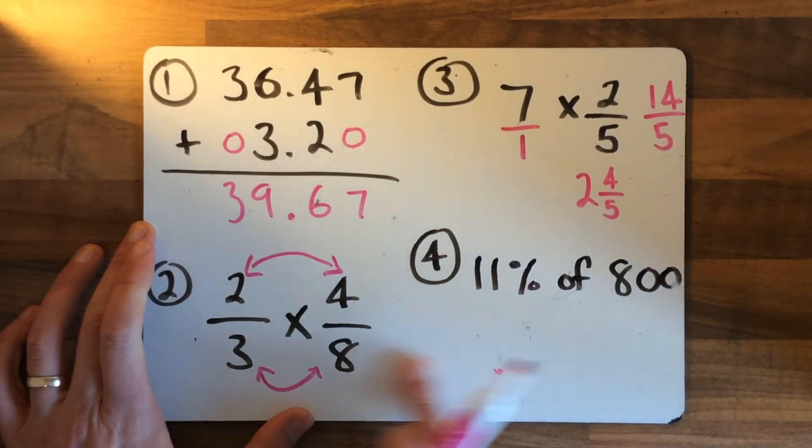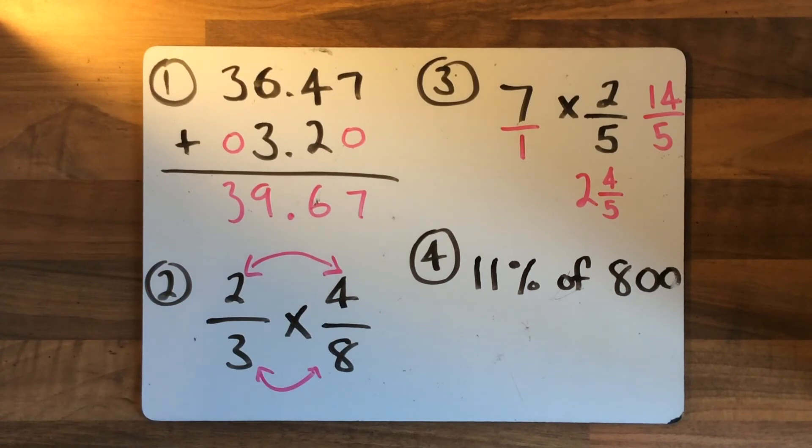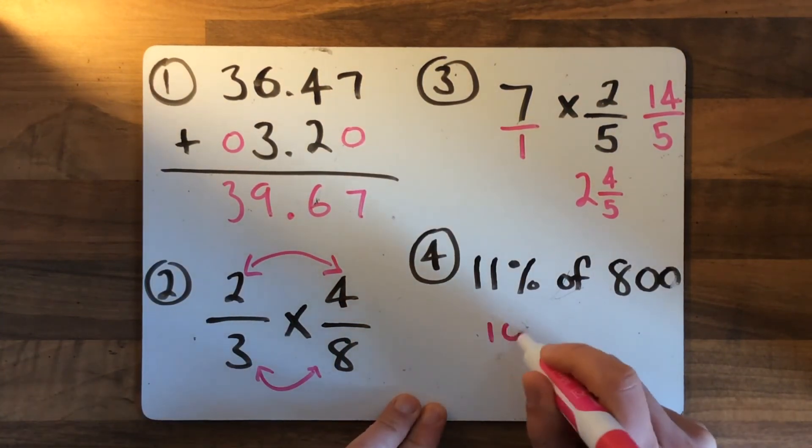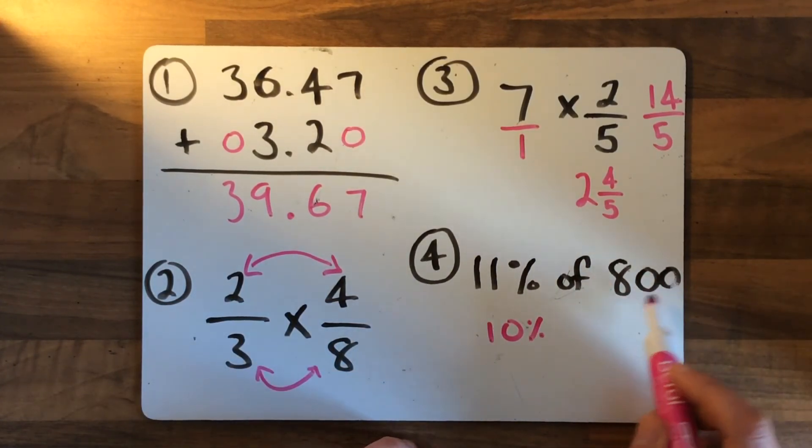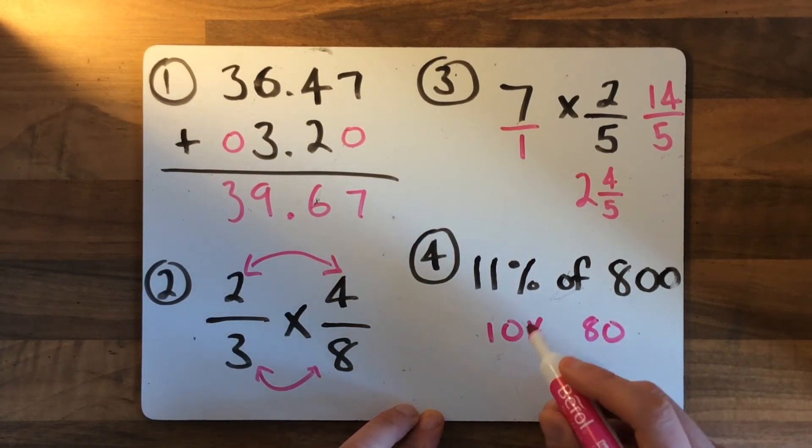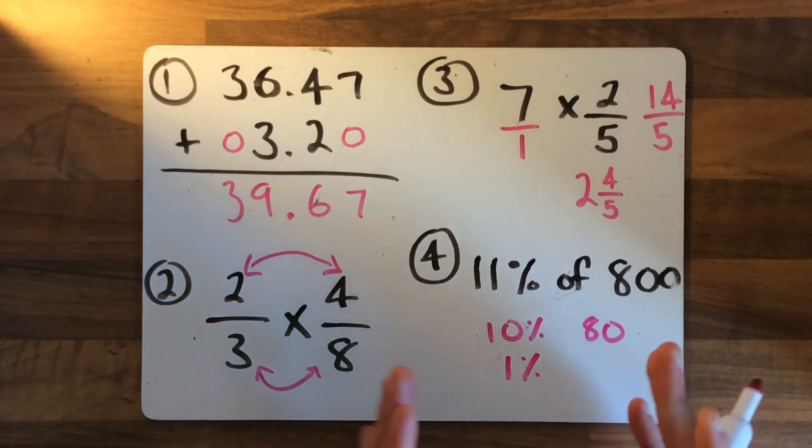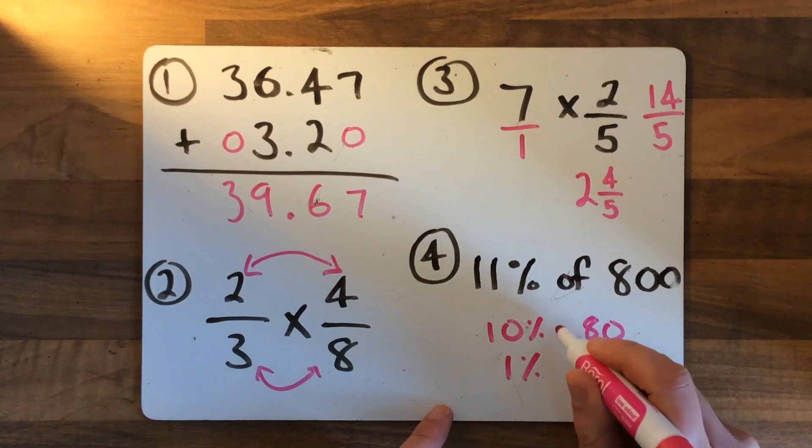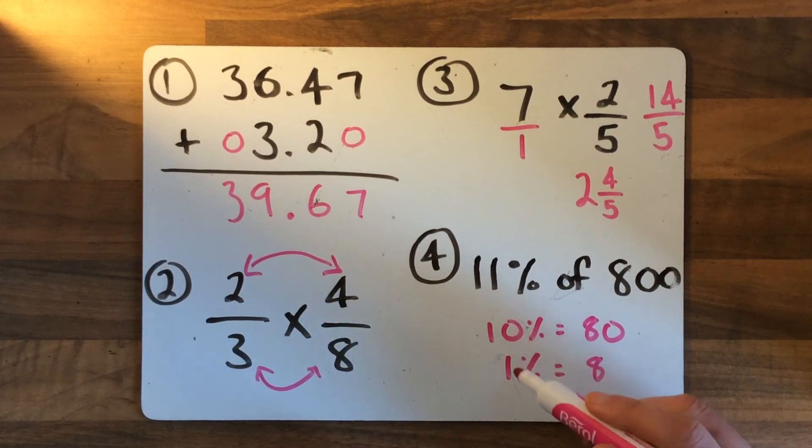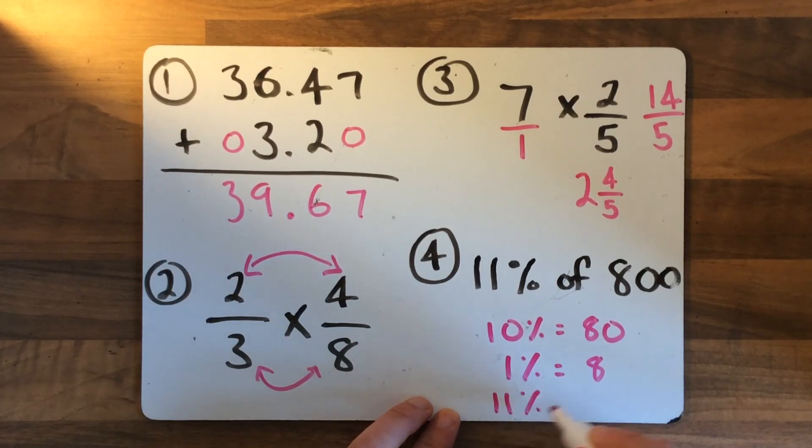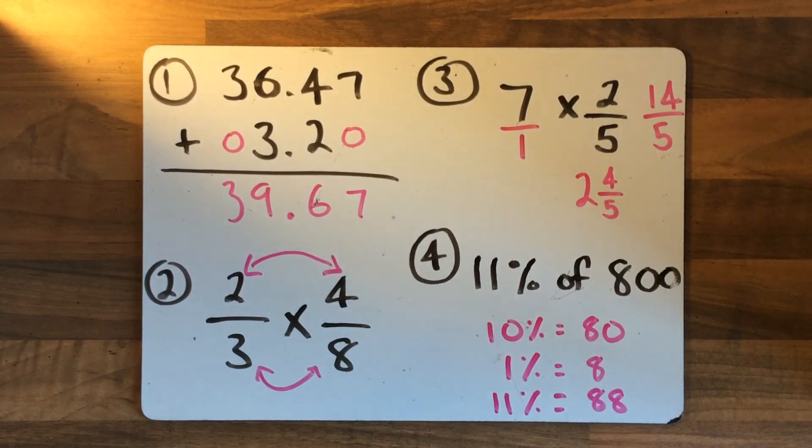Right, let's look at number 4 now: finding 11% of 800. First of all, we need to find what 10% is, which is the same as dividing by 10. 800 divided by 10 is 80. Then we also need to find 1% because 10 add 1 is 11. To find 1%, we move over once more, which means that 1% is 8. Then, because 10 add 1 equals 11, we need to add 80 and 8. That will tell us what the 11% is. So 11% is 88. And there is the answer. Thank you.